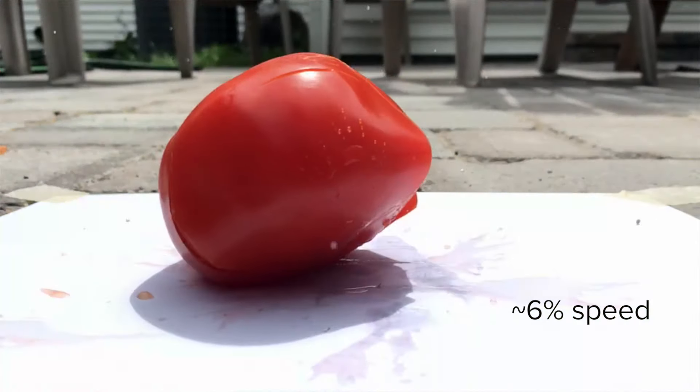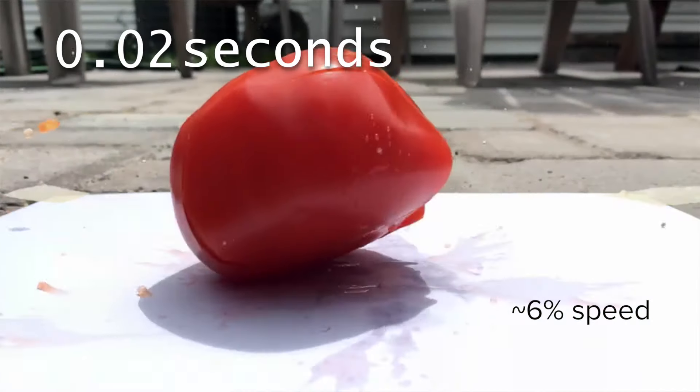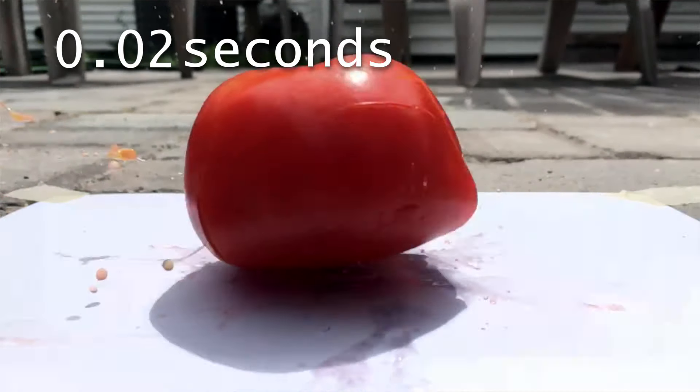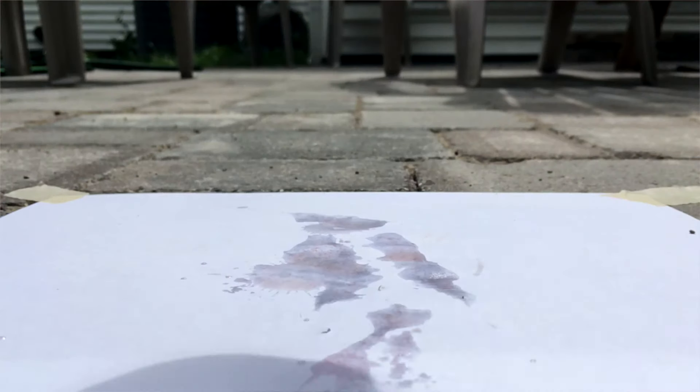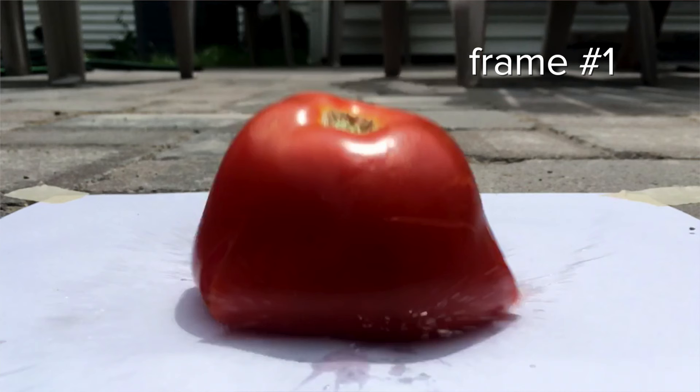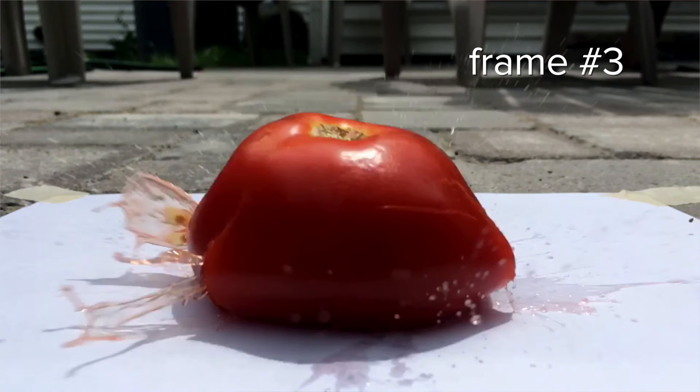Looking at just the collision with the ground, you can see the time of impact is roughly 0.02 seconds. Now, this happens so quickly, we need to use the frame count in order to get a more accurate change in time during the collision.